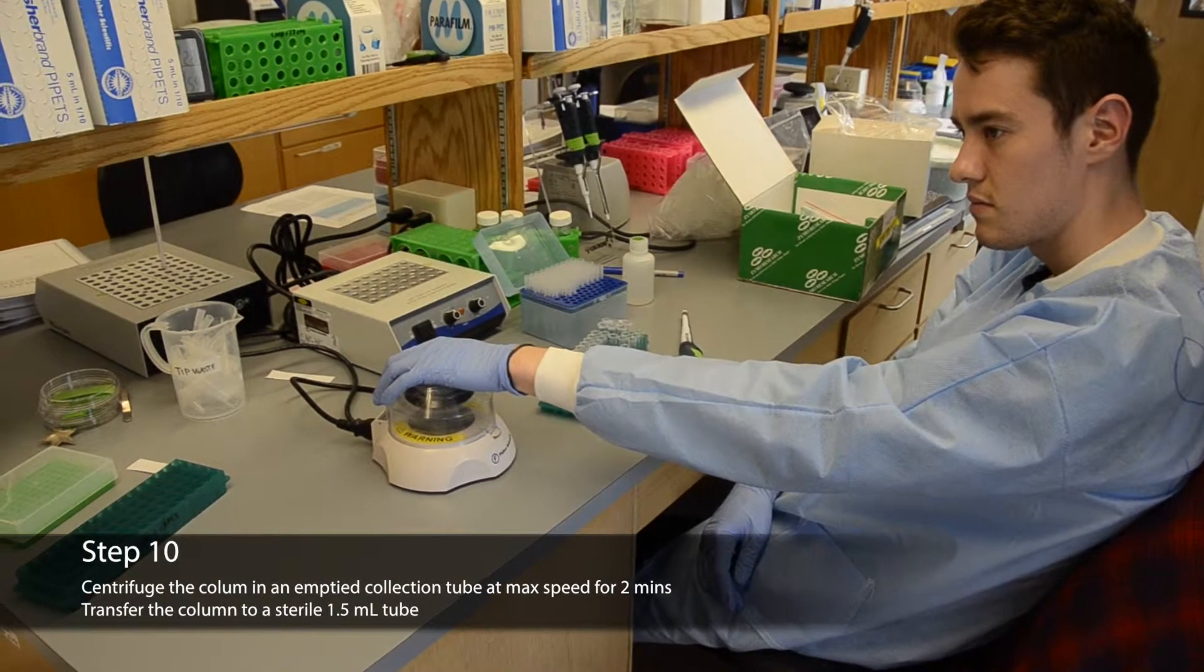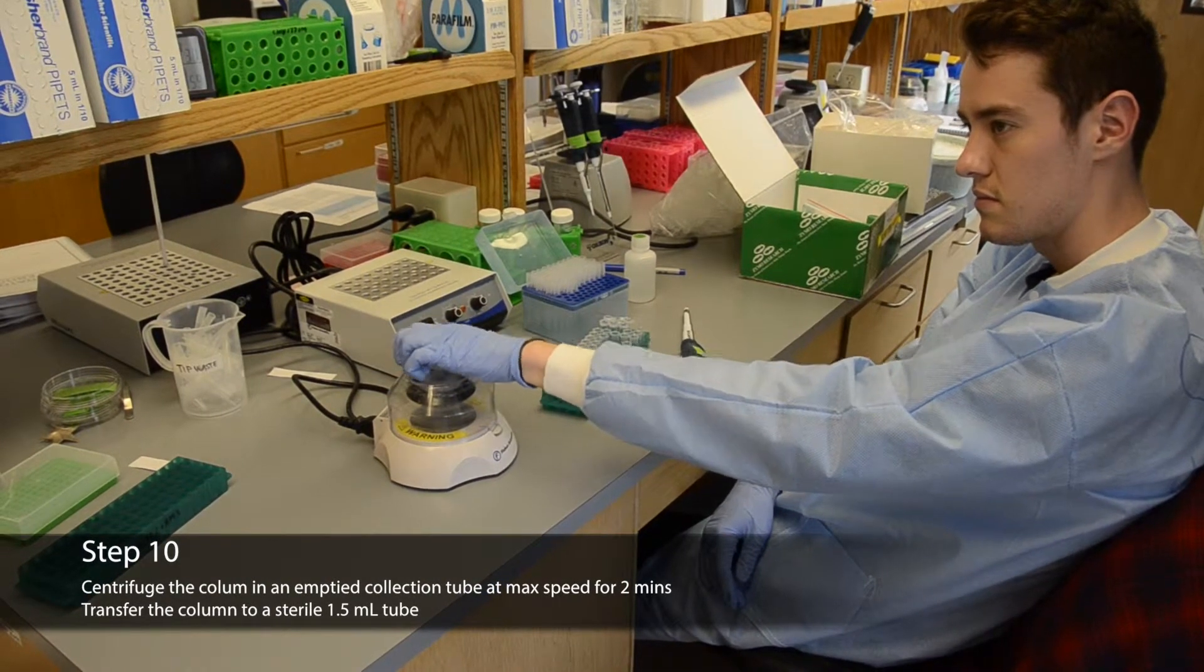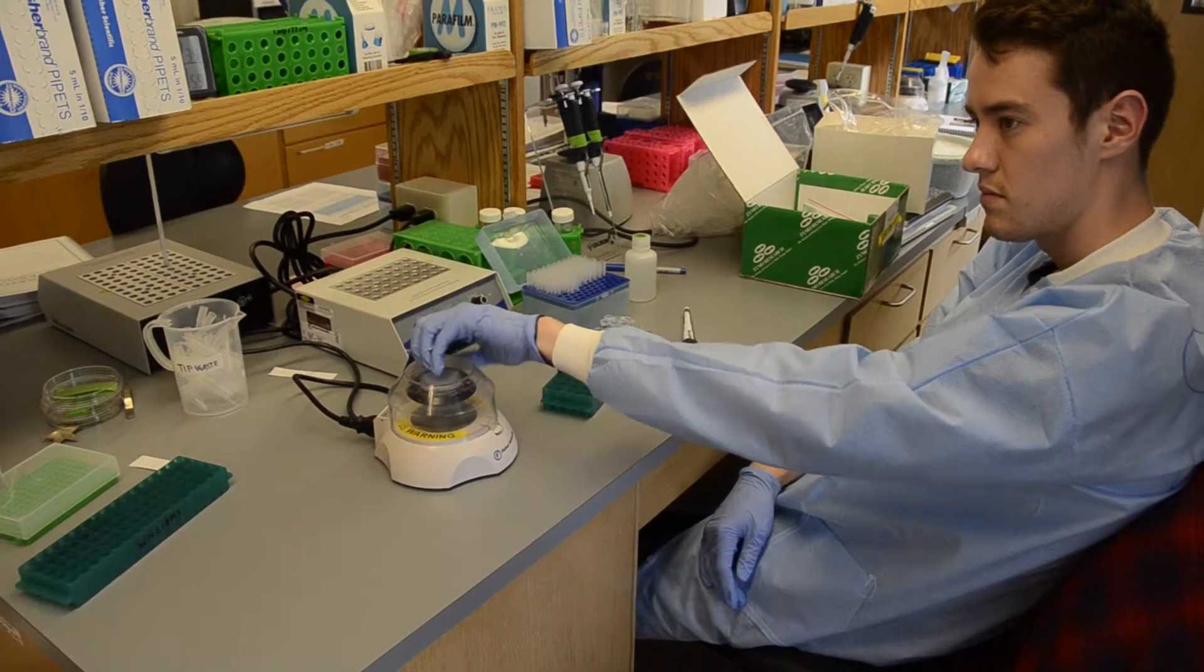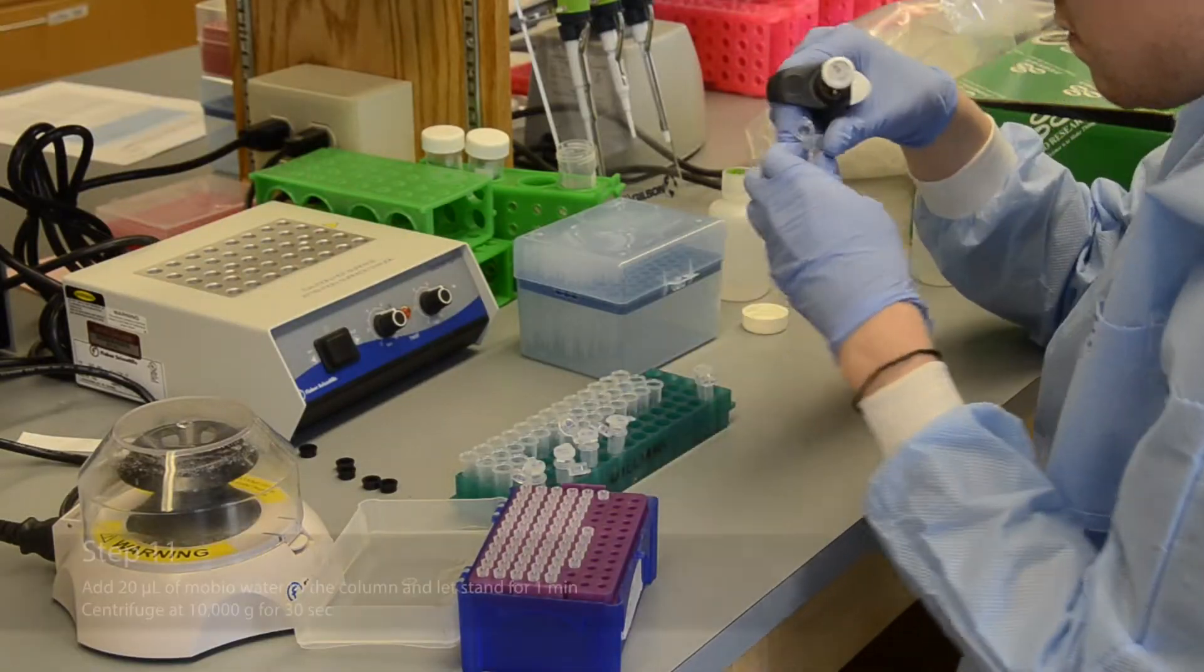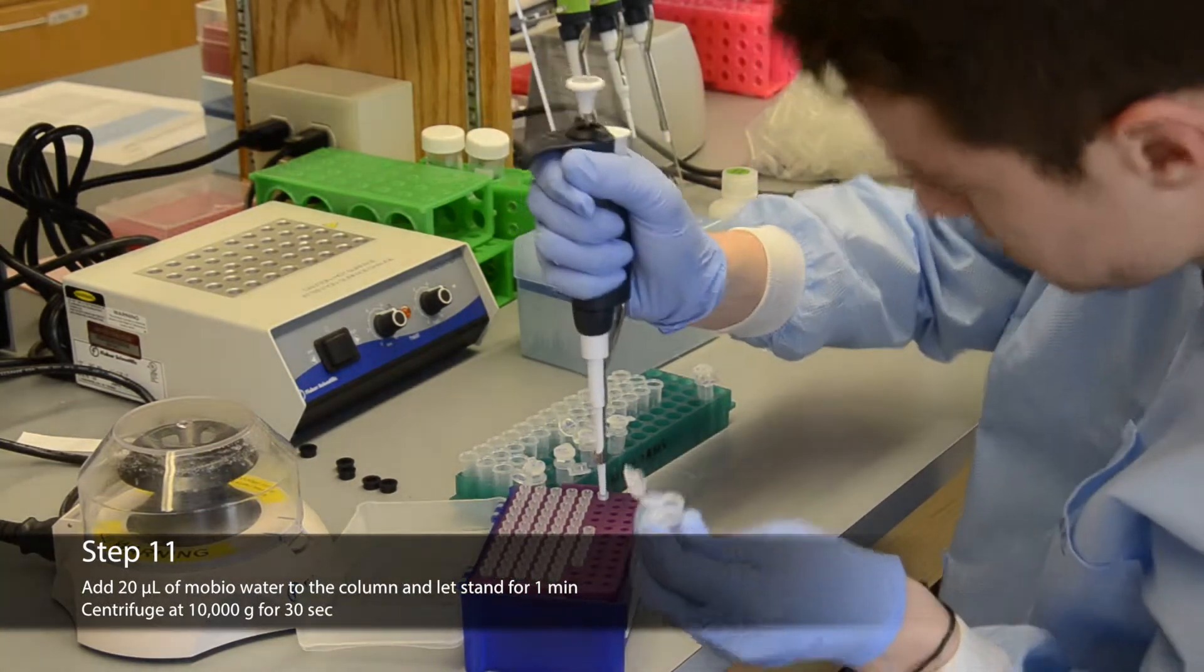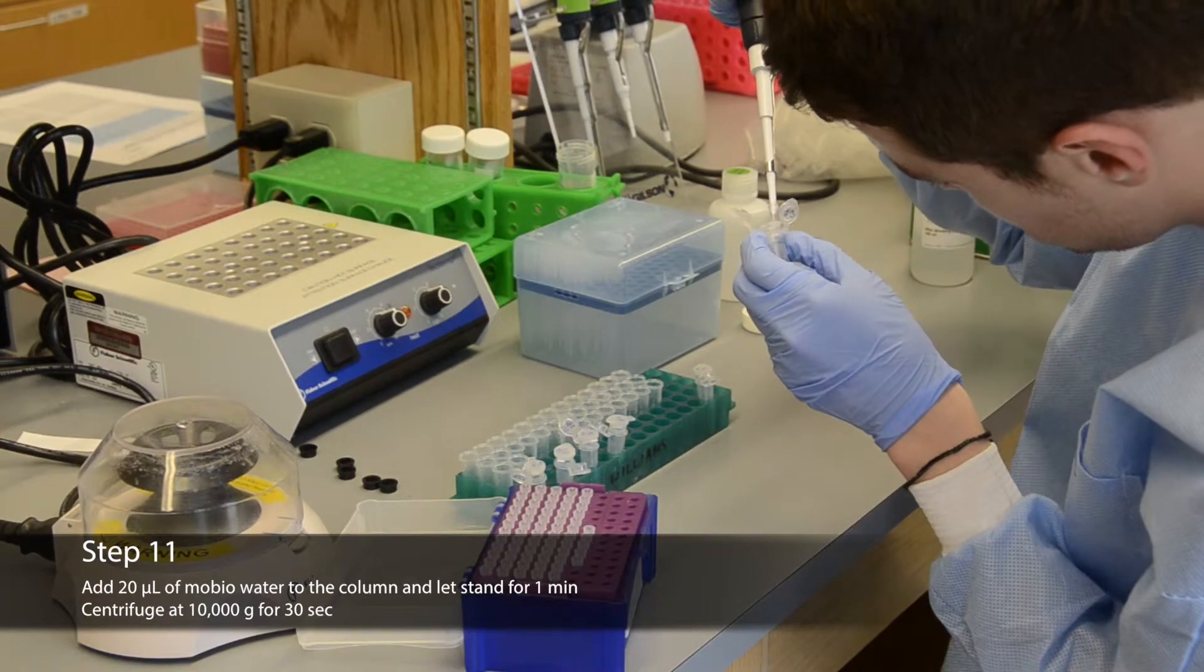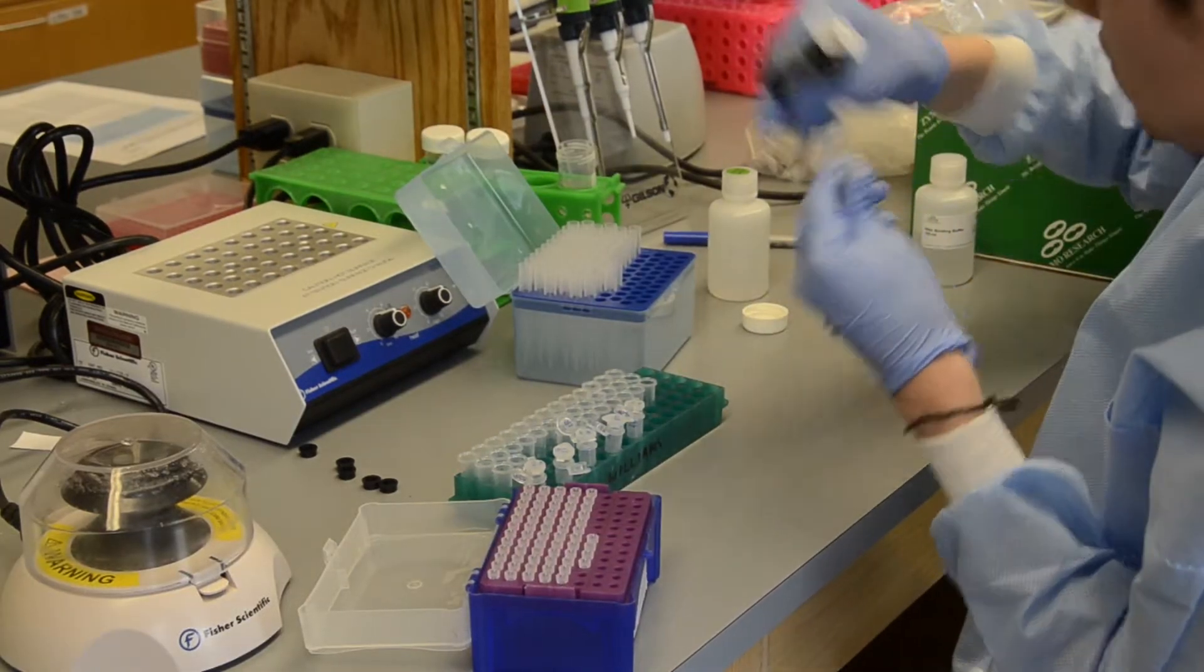Centrifuge the column in an emptied collection tube at max speed for two minutes. Remove the column and transfer it to a sterile 1.5 milliliter tube. Add 20 microliters of molecular biology water to the column and let stand for one minute. Centrifuge at 10,000 times G for 30 seconds.